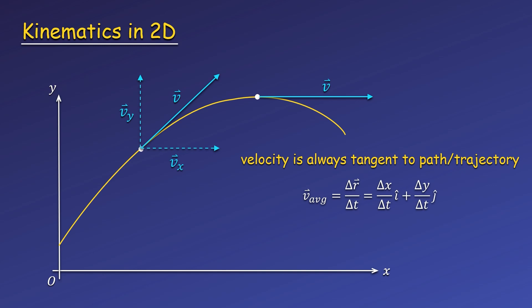In two dimensions, the x and y components of average velocity are given by the x and y displacements divided by time. We can also use calculus to express the components of instantaneous velocity using time derivatives.